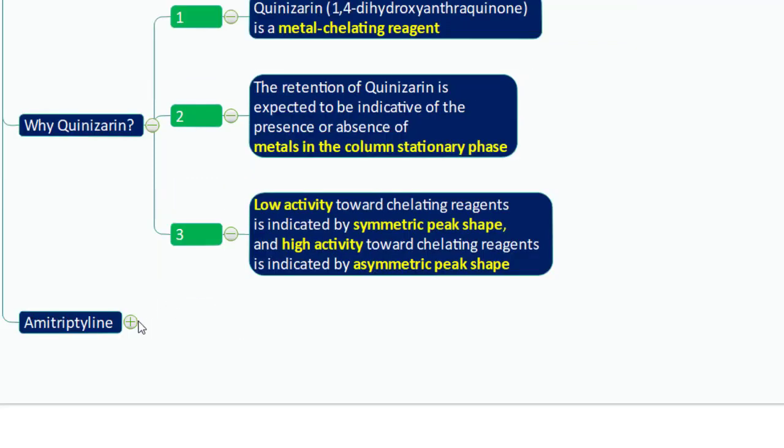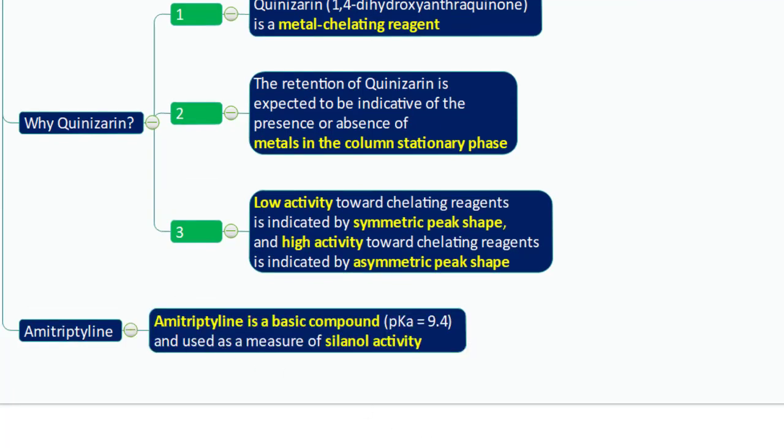The last compound proposed by USP is amitriptyline, a basic compound with a pKa of around 9.4. It serves as a good indicator of silanol activity, since basic compounds are known to interact strongly with silanol groups on the stationary phase.